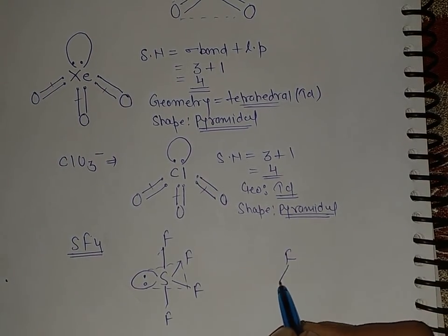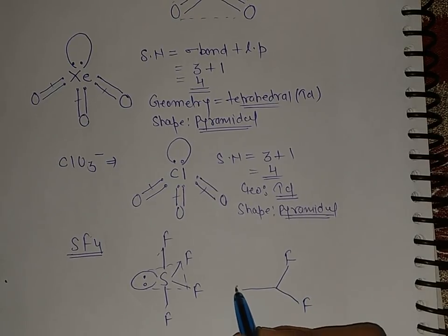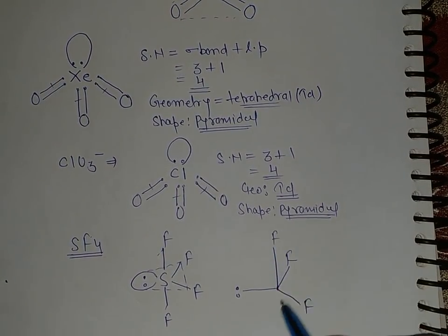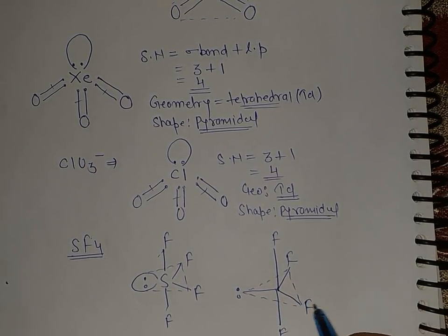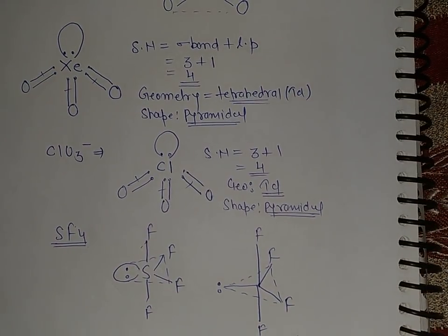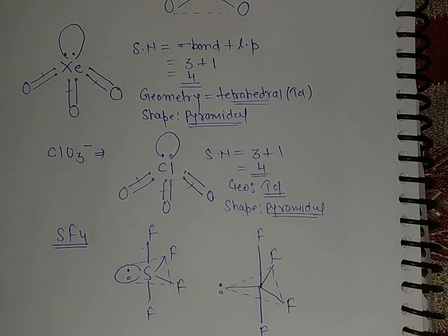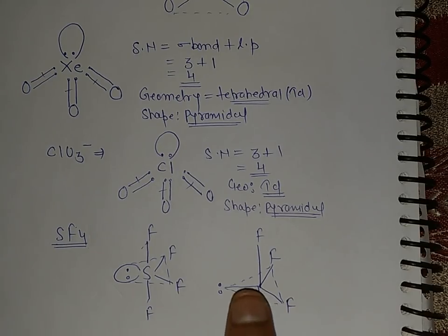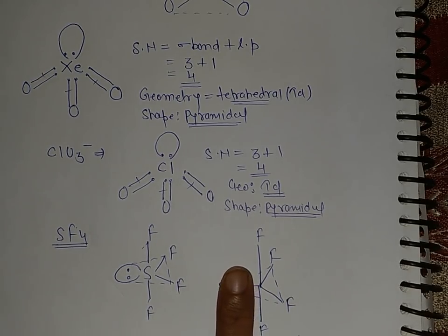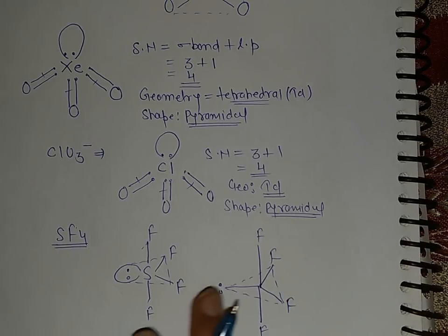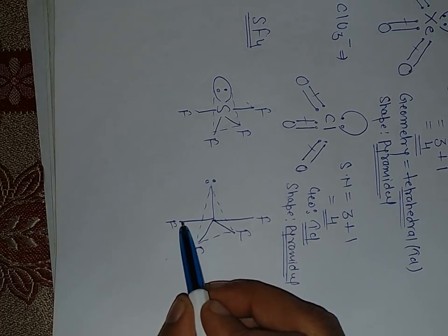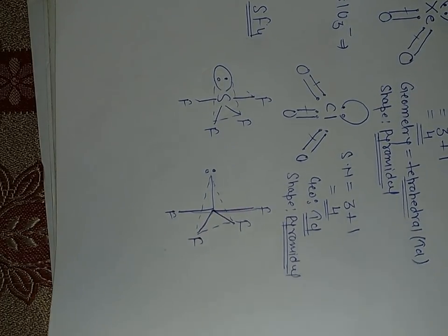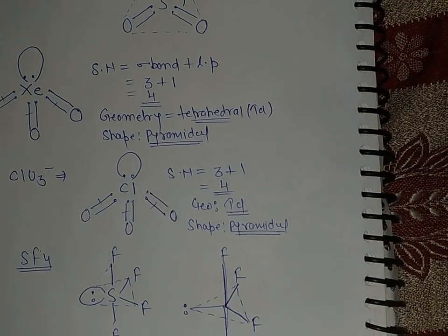In the TBP structure of SF4, there are two axial and three equatorial positions, but one equatorial position is occupied by a lone pair. The geometry is TBP, but the shape is see-saw — because we don't look at the lone pair when determining shape. This illustrates why geometry and shape are different concepts.